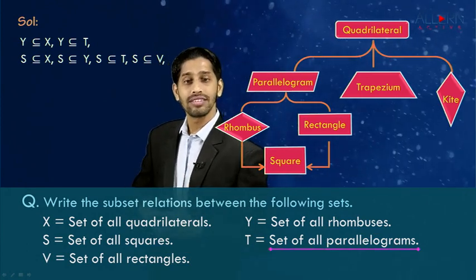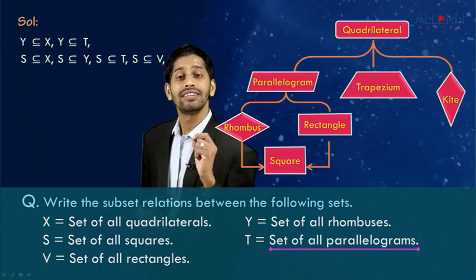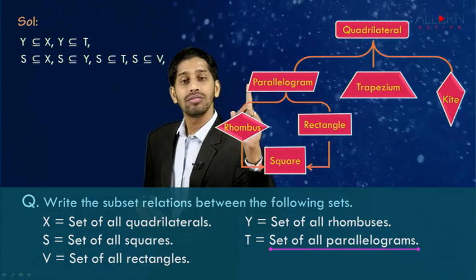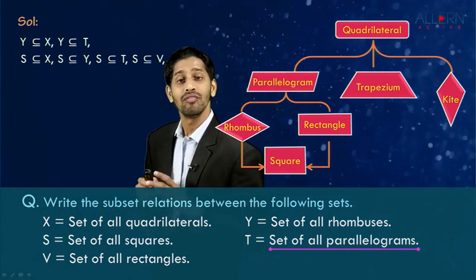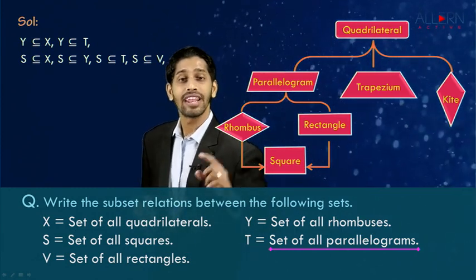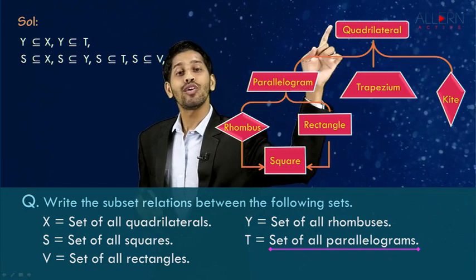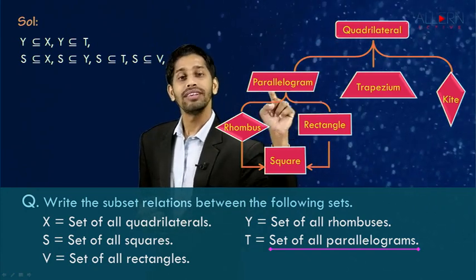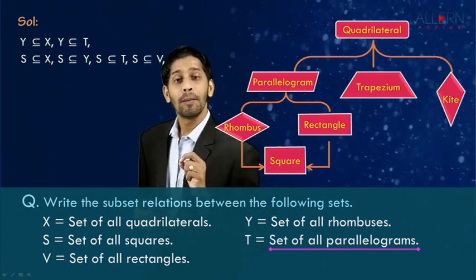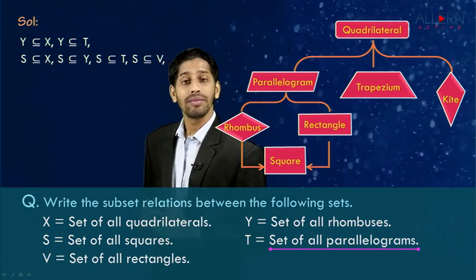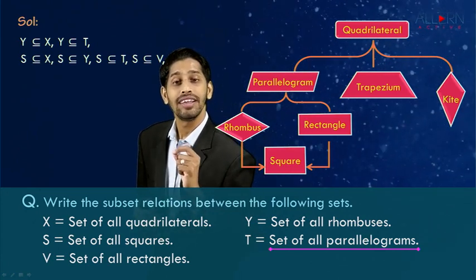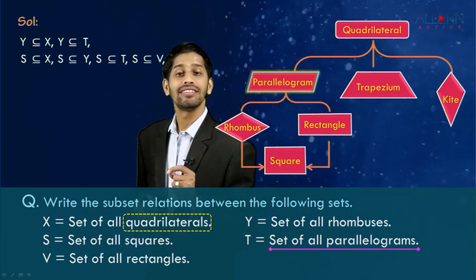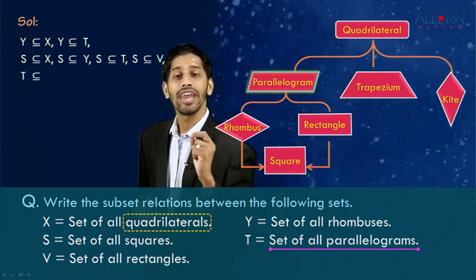Moving to the next set, that is T, the set of all parallelograms. Observing the diagrammatic representation, parallelogram is a part of quadrilateral, which means parallelogram is a subset of quadrilateral. Parallelogram is denoted by letter T, so we say that T is a subset of X.